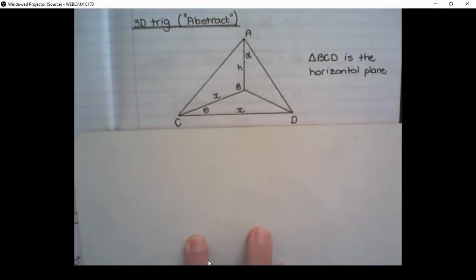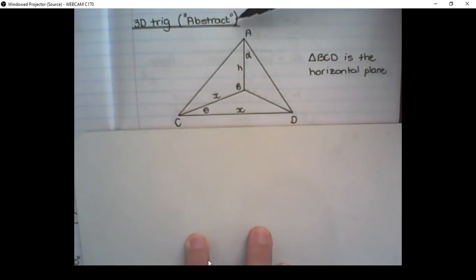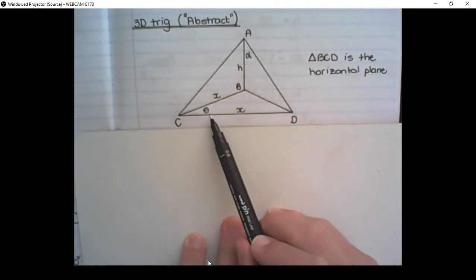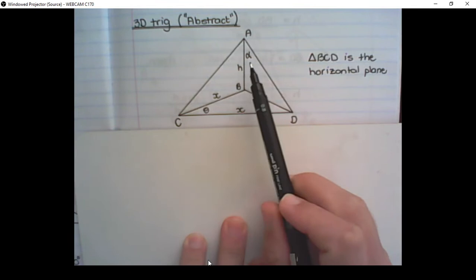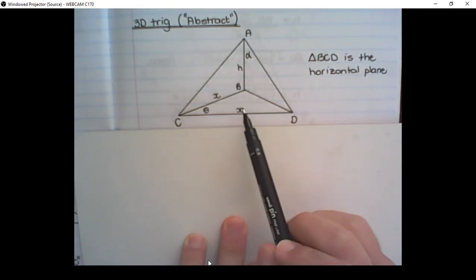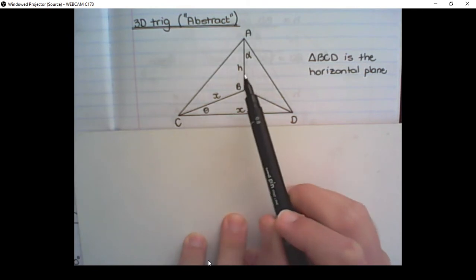Hello guys. In today's lesson we are continuing with 3D Trigonometry and we're moving to more abstract examples. Abstract meaning we're not going to work with specific angle sizes nor specific lengths — we are simply going to work with variables.